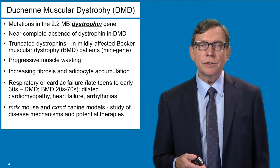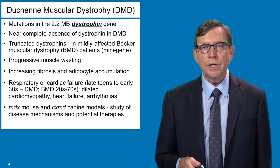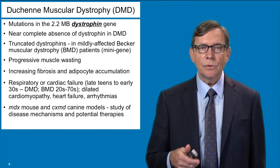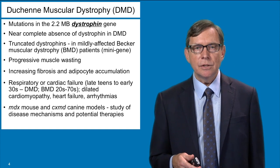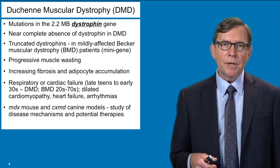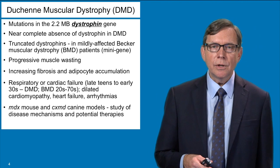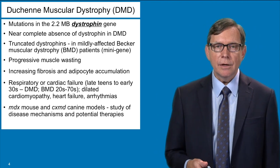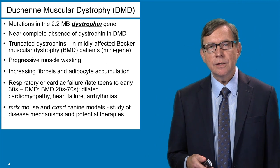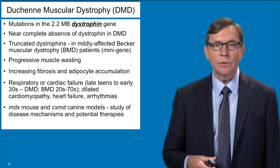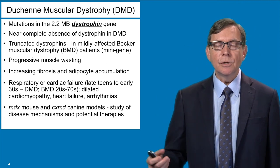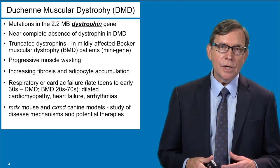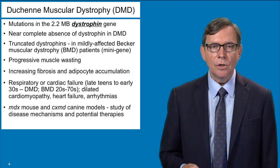In general, Duchenne muscular dystrophy is characterized by progressive muscle wasting, and the muscle tissue is gradually replaced by connective tissue or fibrosis, as well as fat cell accumulation. Typically, patients will succumb to either respiratory or cardiac failure. With increasing medical care, many patients are now living until their mid-20s, sometimes into their 30s. Patients with the milder Becker muscular dystrophy have a slower age of onset, a slower progression of the disease, and they typically have a longer lifespan.